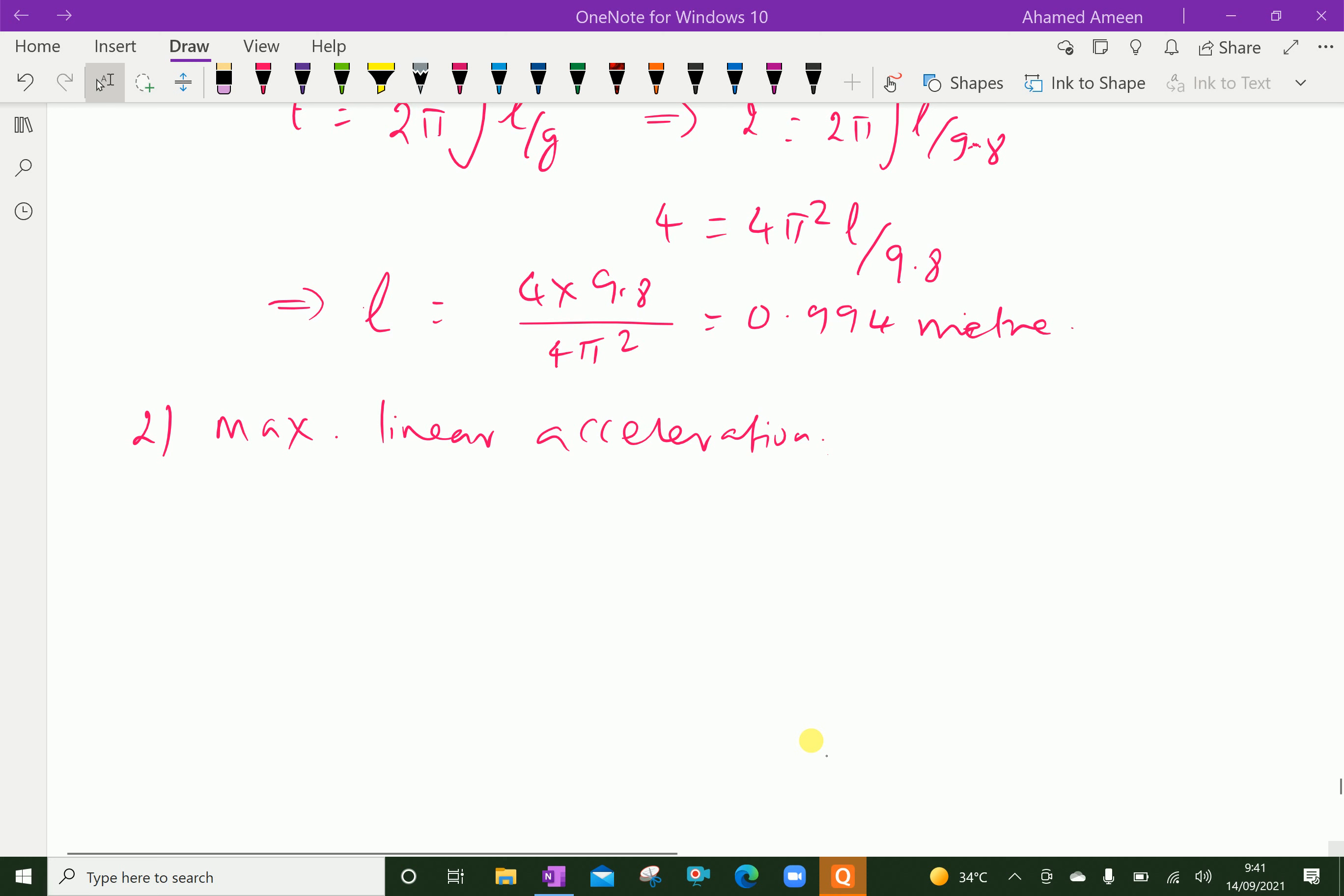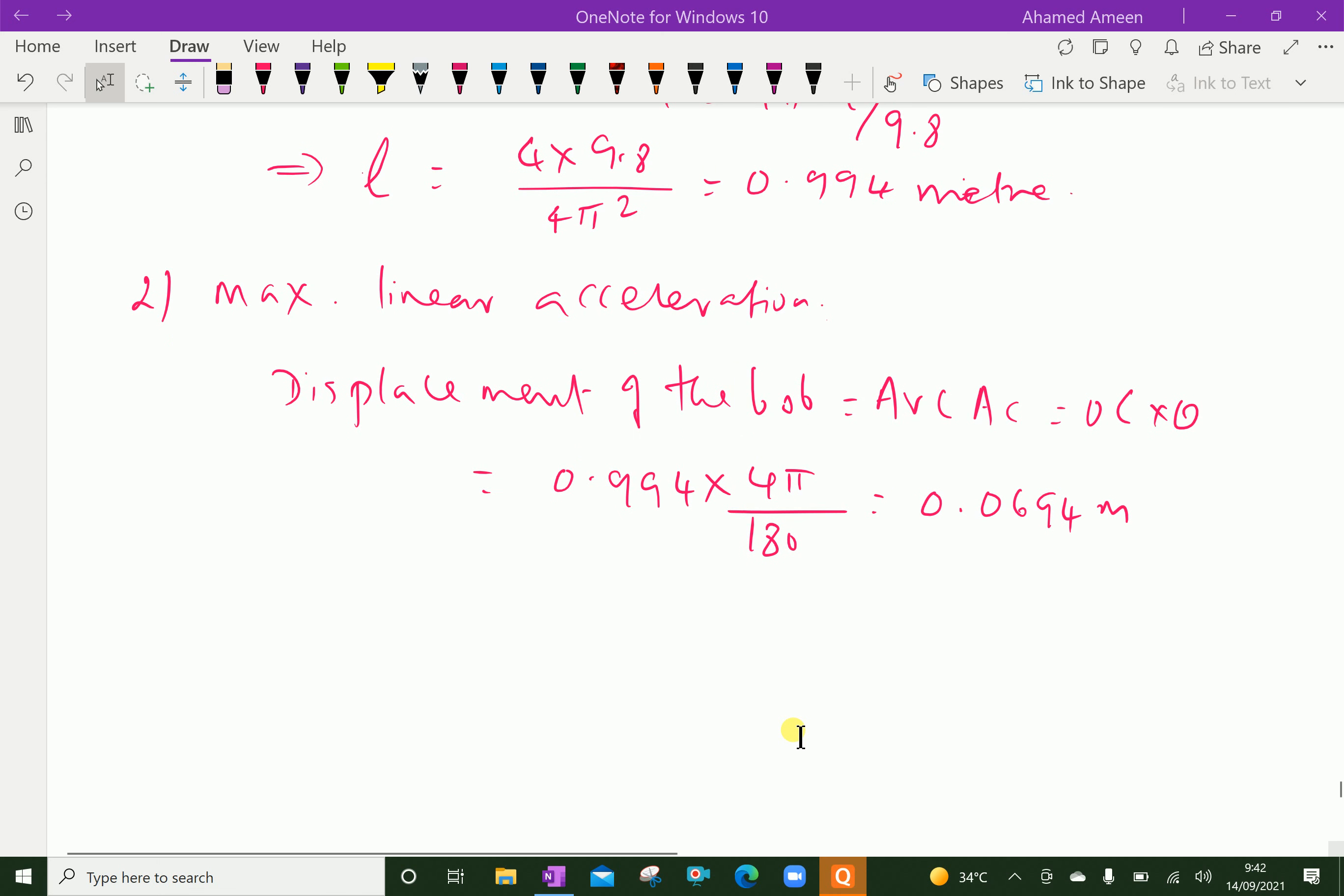For that, displacement of the bob, displacement of the bob equals arc AC which equals OC into theta in radians, which equals arc length here 0.994 into 4π by 180.